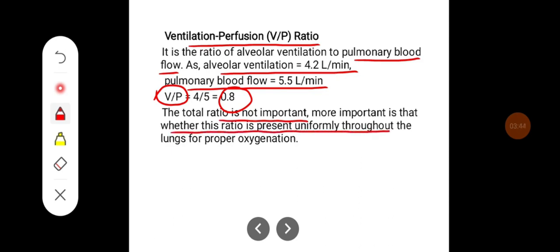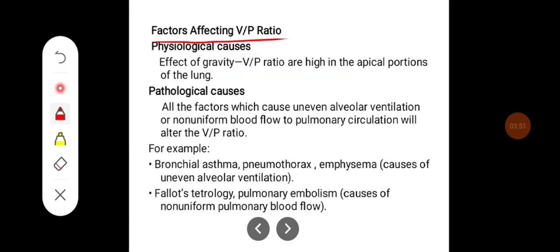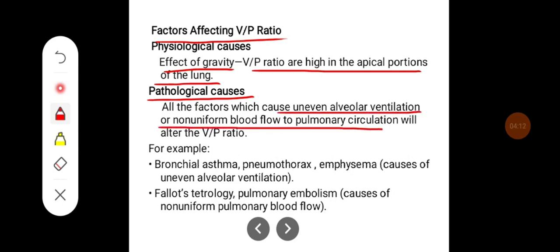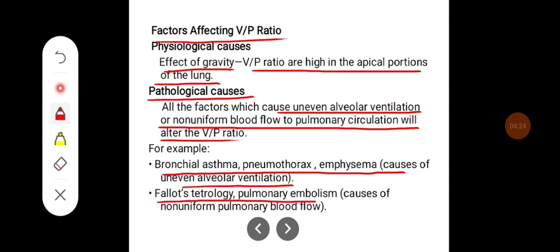Factors affecting the ventilation-perfusion ratio: physiological causes include the effect of gravity — the ratio is high in the apical portions of the lung and less at the base. Pathological causes include all factors causing uneven alveolar ventilation or non-uniform blood flow to the pulmonary circulation. For example, bronchial asthma, pneumothorax, and emphysema cause uneven alveolar ventilation, whereas Fallot's tetralogy and pulmonary embolism cause non-uniform pulmonary blood flow.